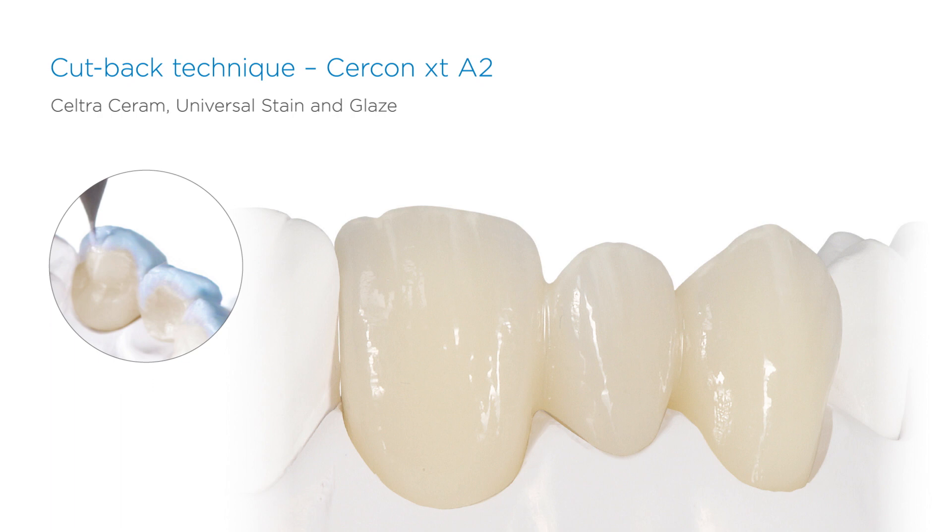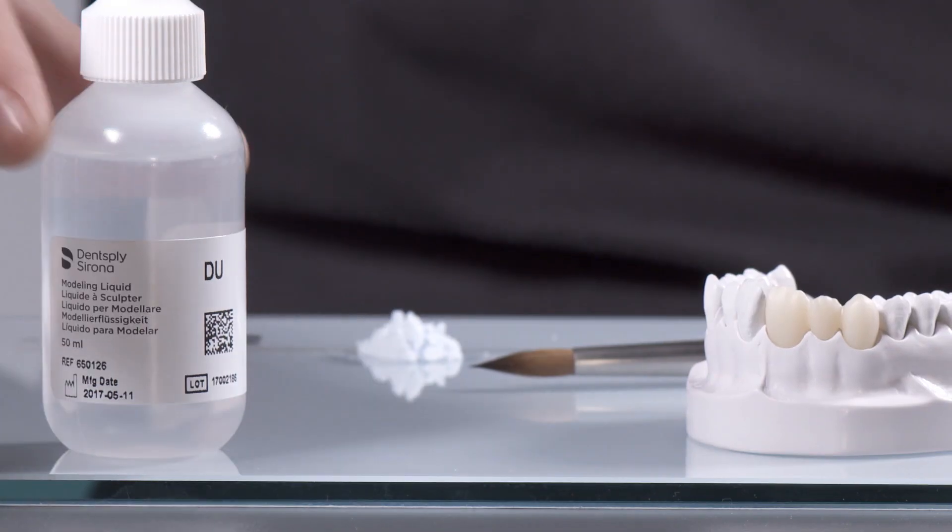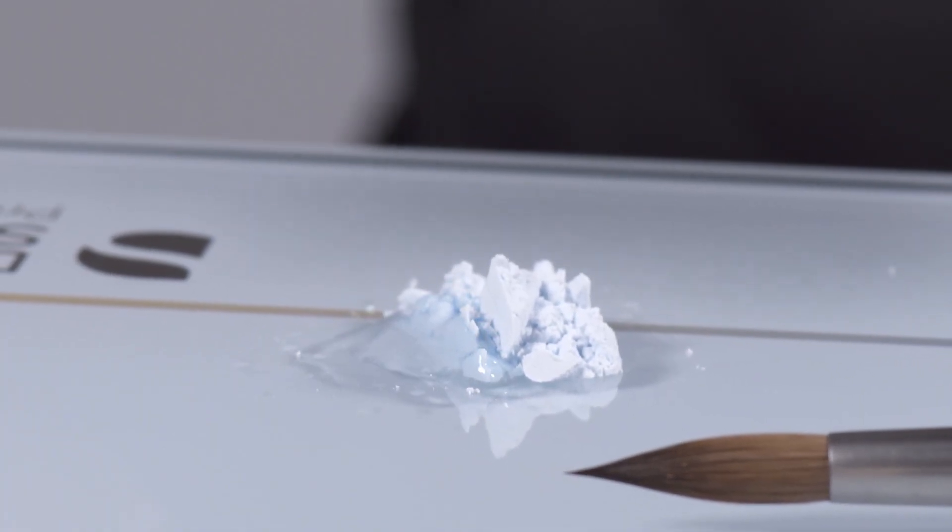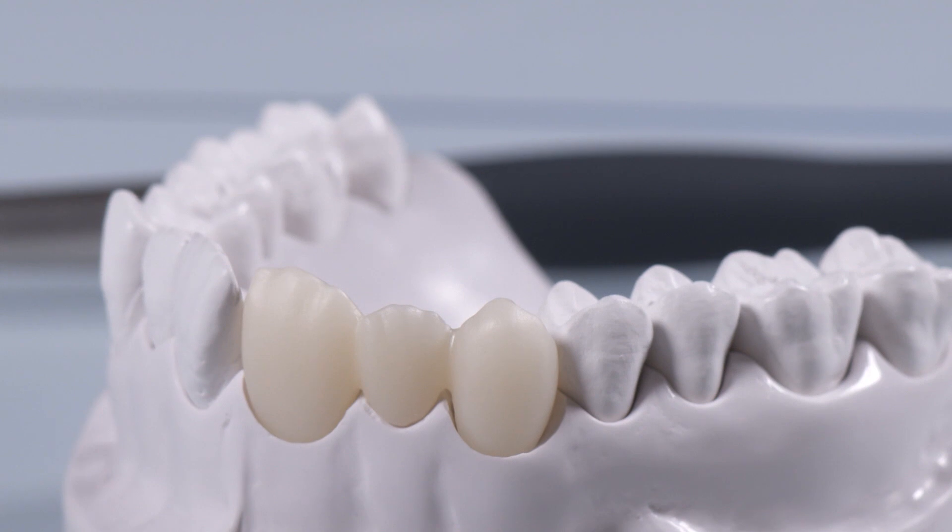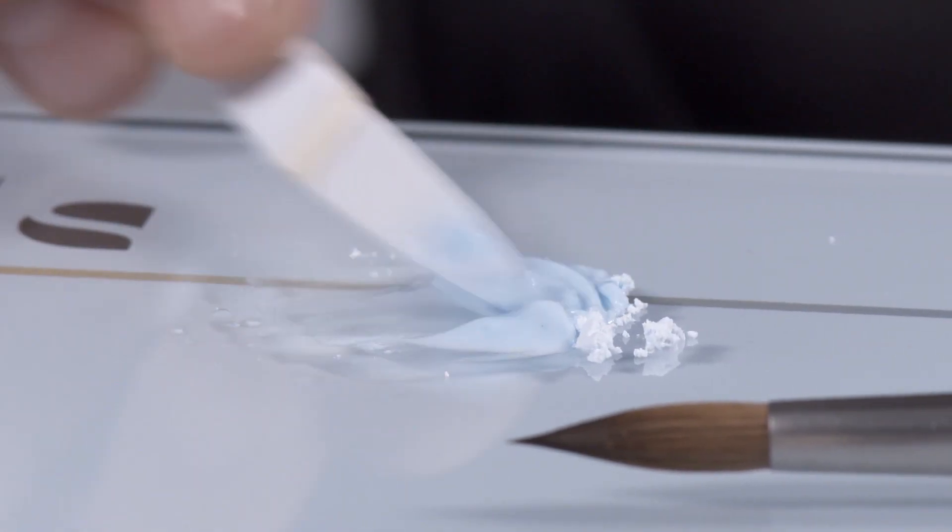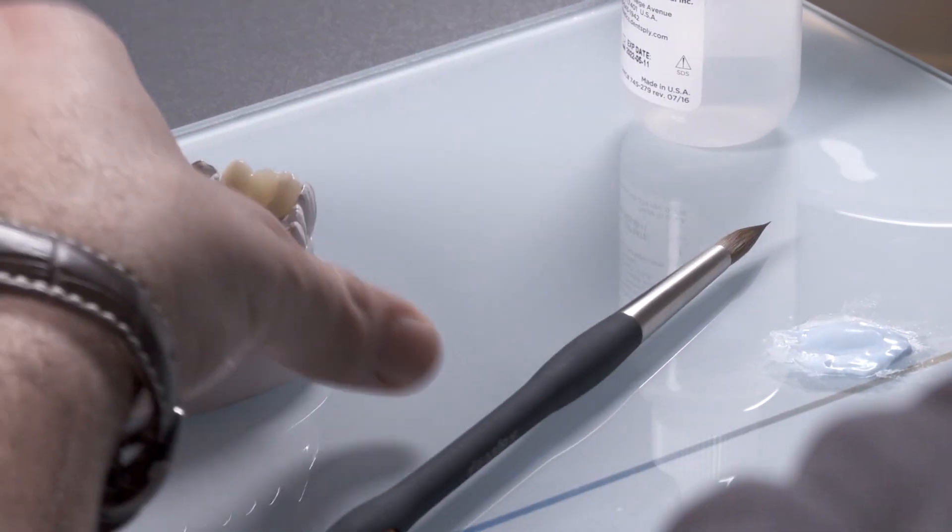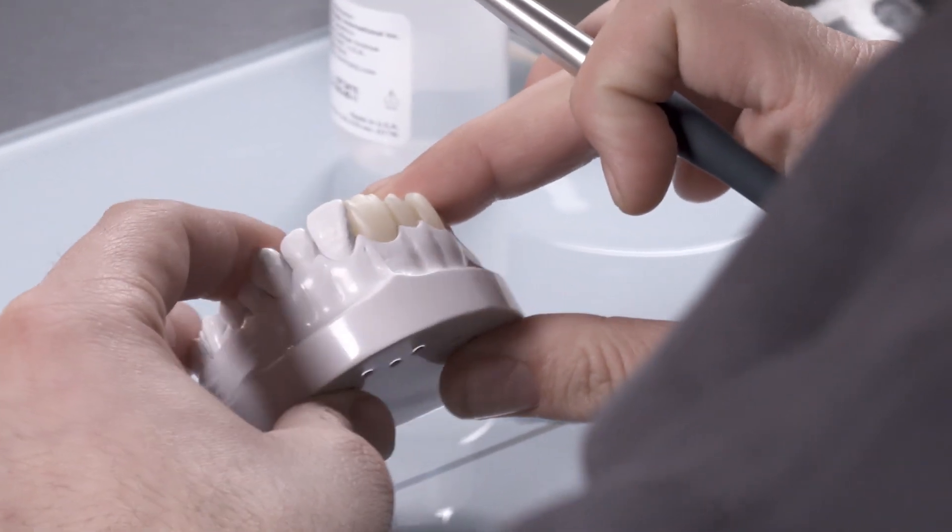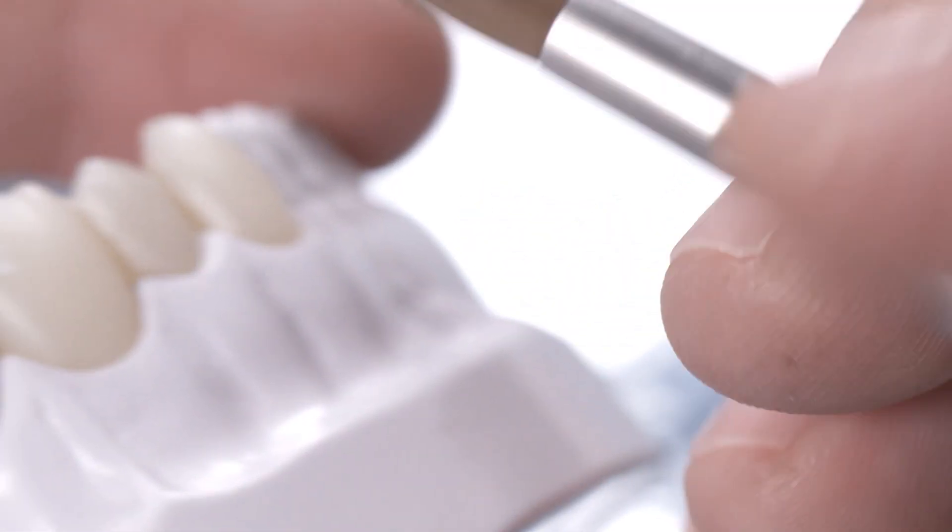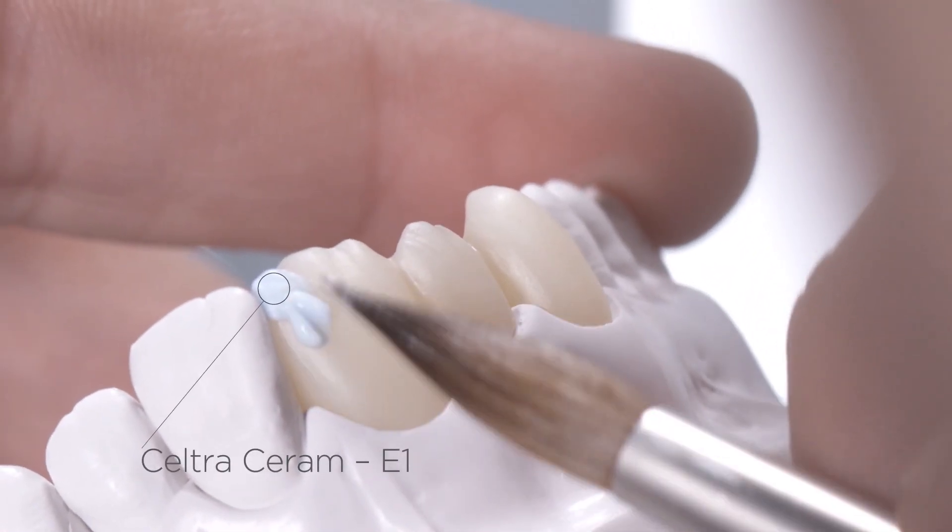The cutback technique and Circon XT offer an excellent opportunity to further improve aesthetics by applying only one incisal material, namely Seltra Ceram Enamel Incisal E1. The Mamelon structures were created when designing the framework. Build up the labial and palatal aspects of the enamel layer with Enamel E1 and shape them to obtain their final contours.